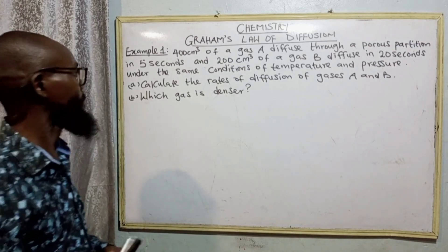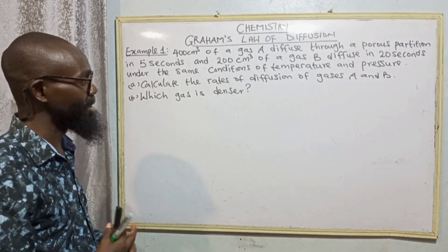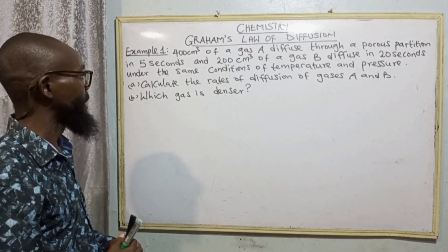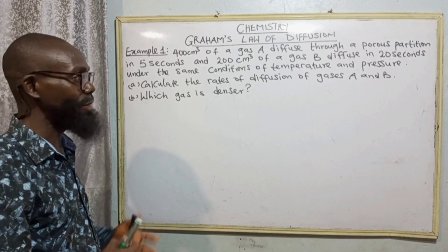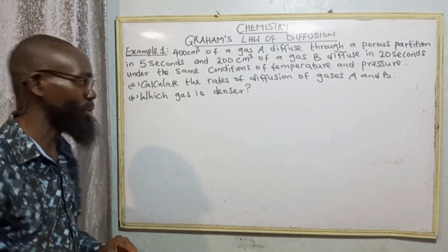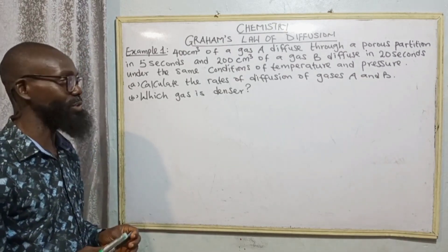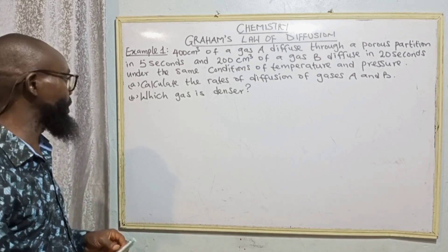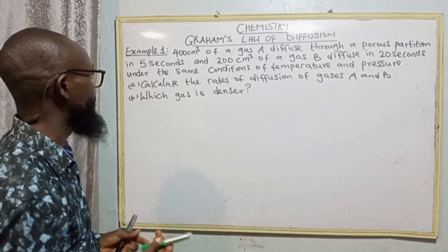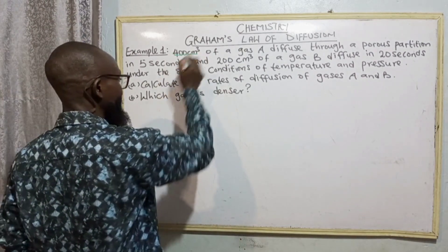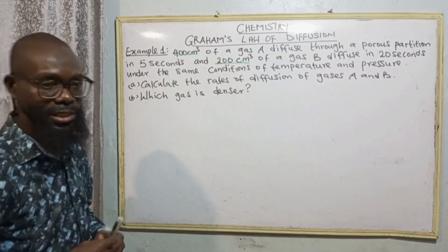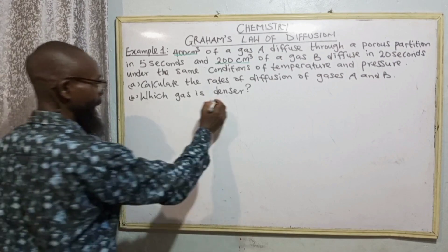Example 1: 400 cm³ of a gas A diffused through a porous partition in 5 seconds, and 200 cm³ of a gas B diffused in 20 seconds under the same conditions of temperature and pressure. Question A: calculate the rates of diffusion of gases A and B. Question B: which gas is denser? Looking at this, 400 cm³ of gas A and 200 cm³ of gas B — they have different volumes, so we are going to work them separately.